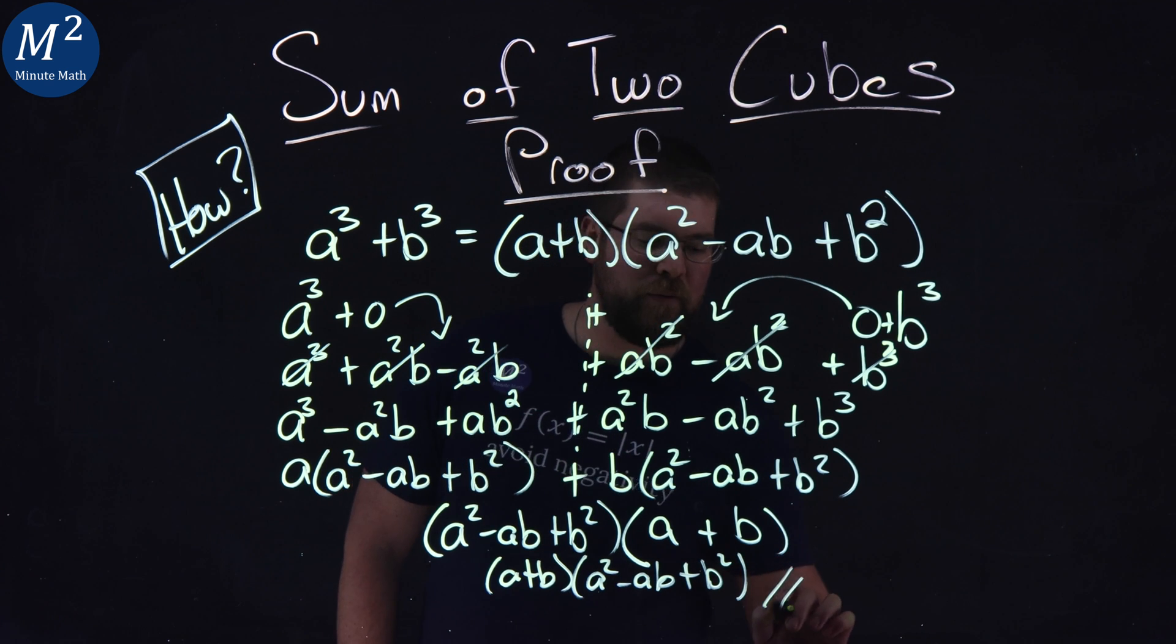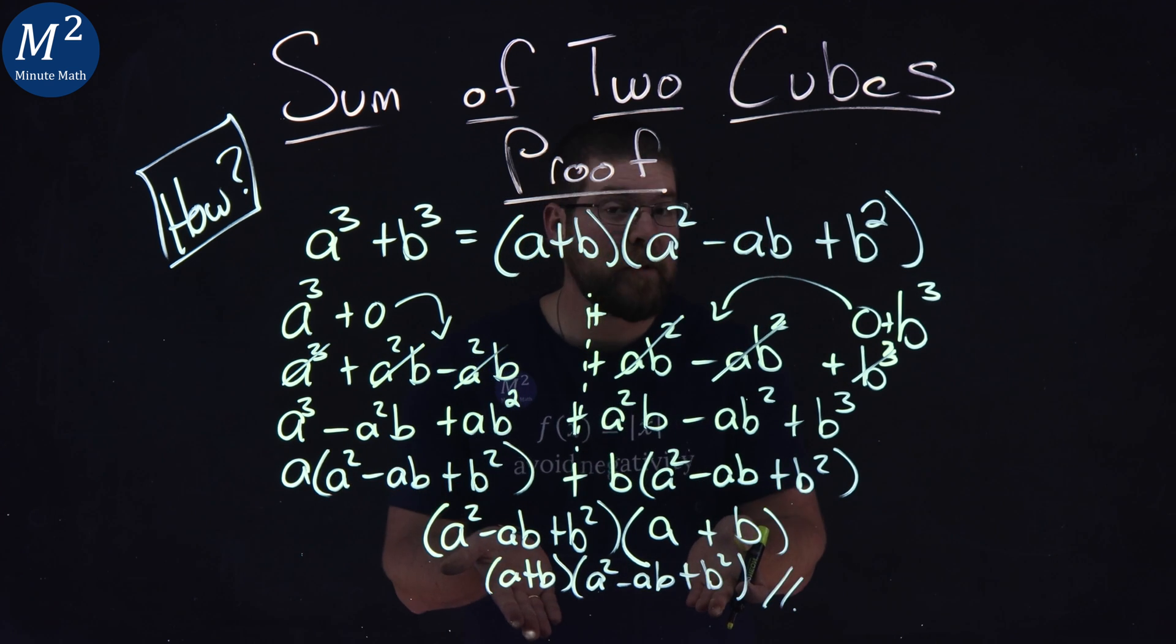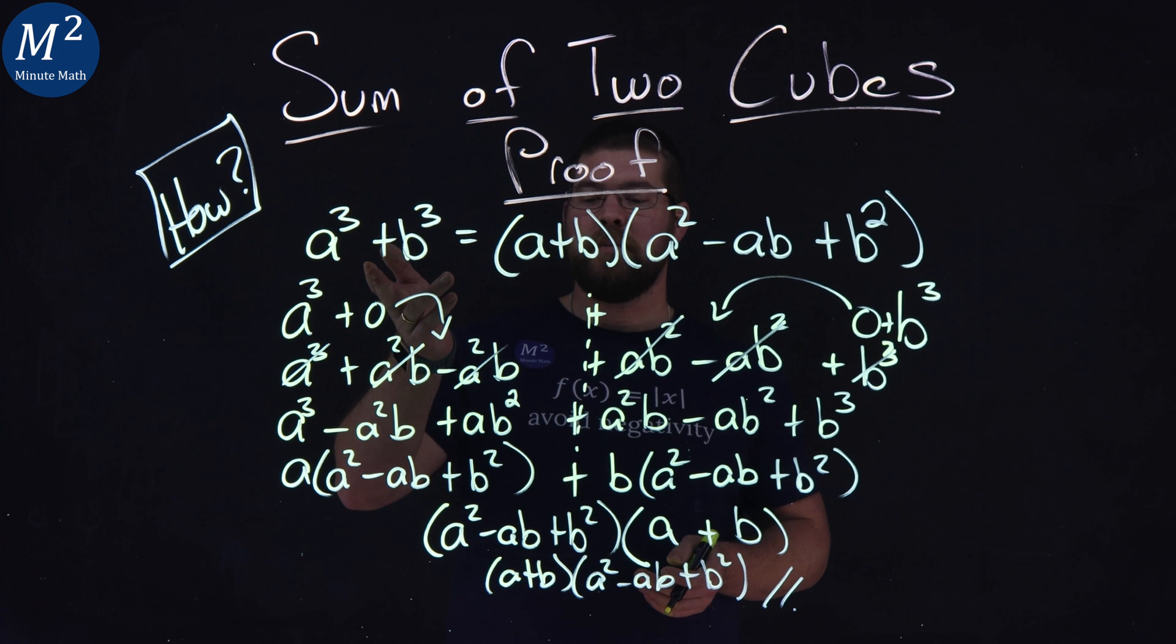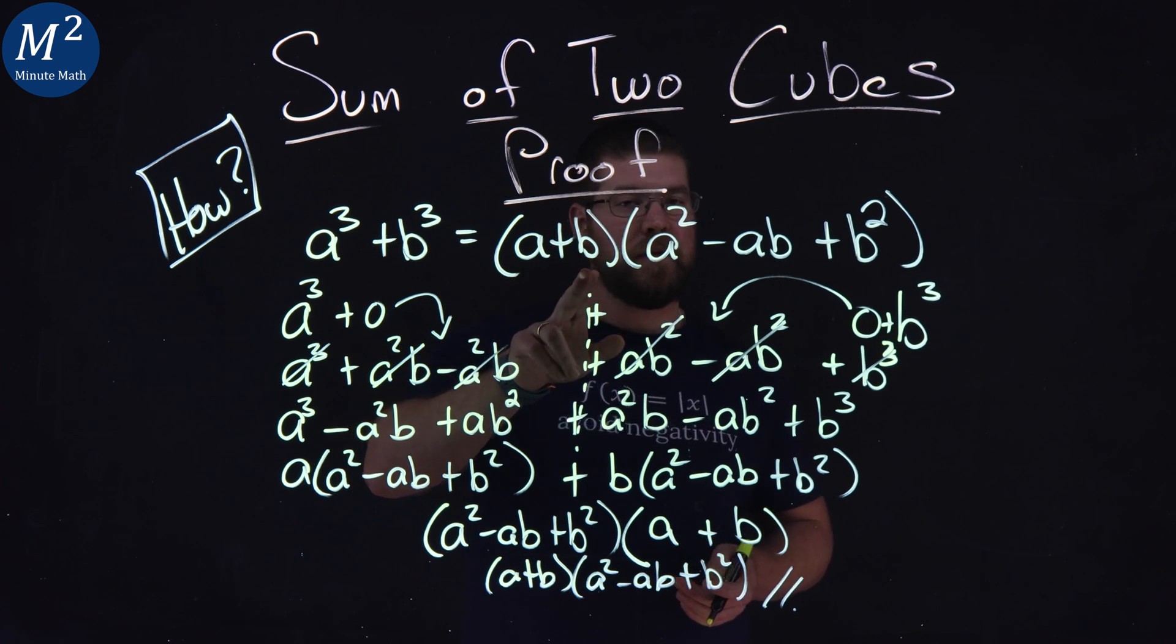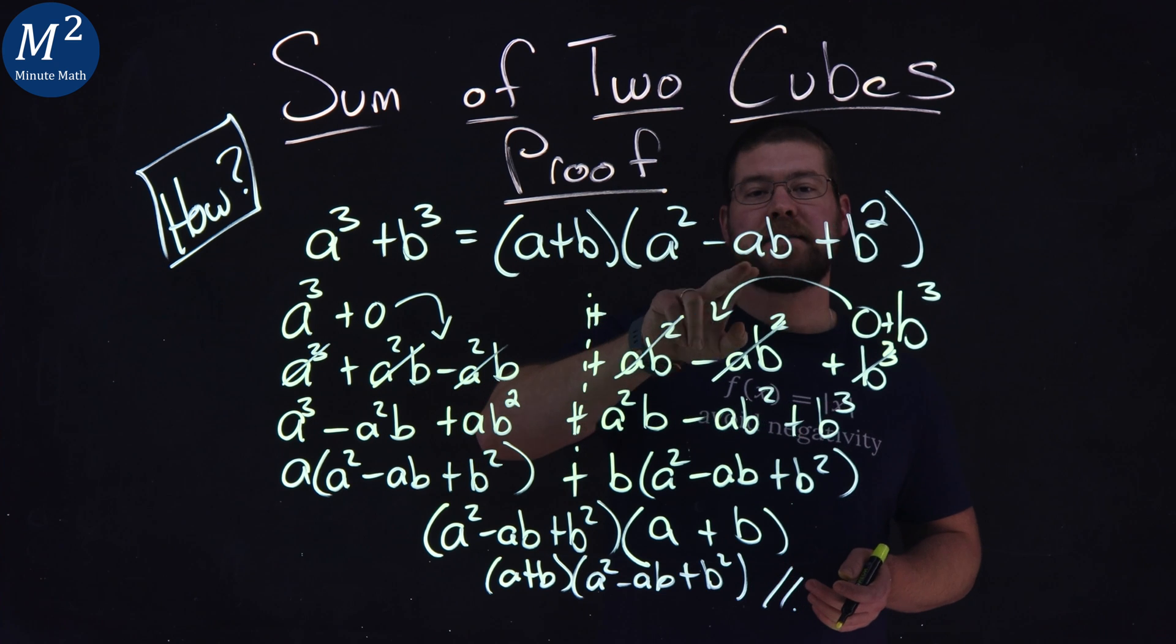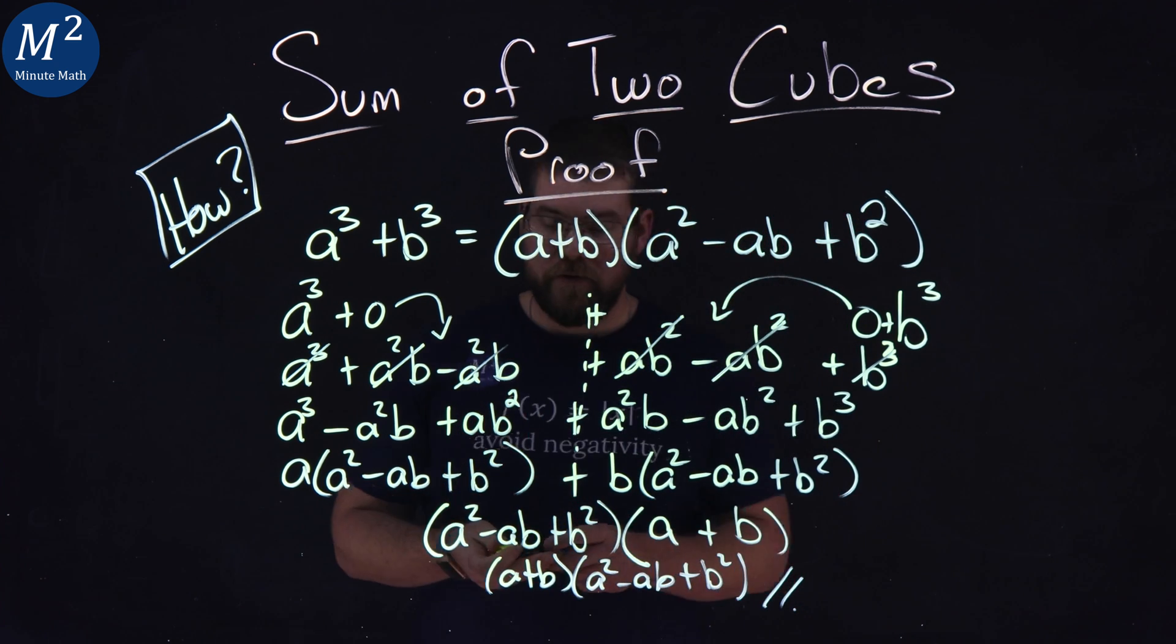And there we have it. We have what we were looking for in the beginning, that a cubed plus b cubed is equal to a plus b times a squared minus ab plus b squared.